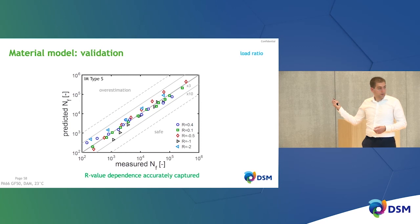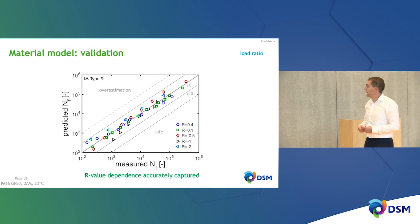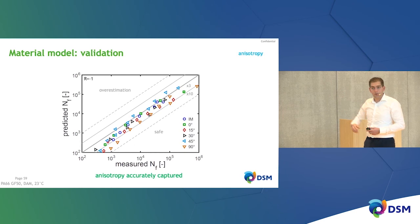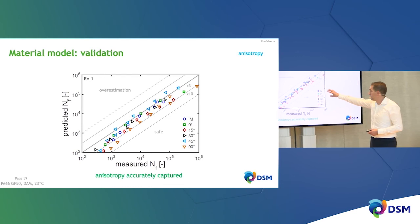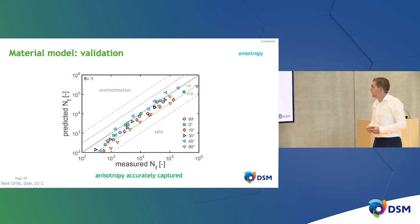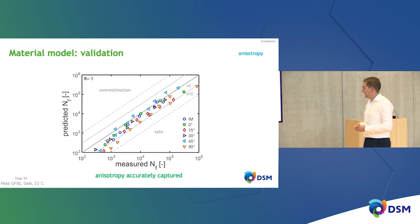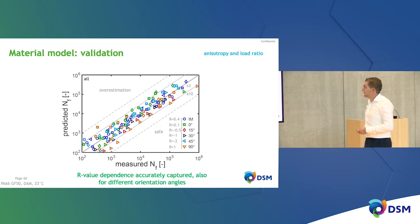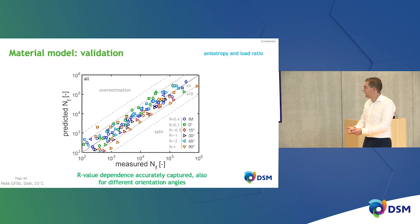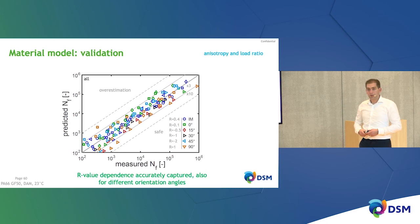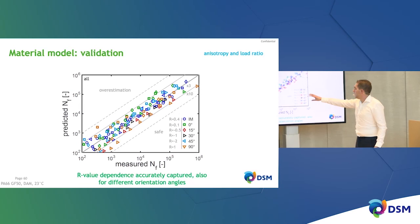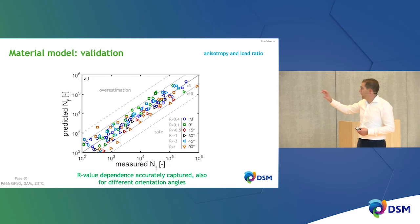For anisotropy, looking at R = -1 for samples with various microstructures — injection-molded tensile bars and plaque samples at different orientations — we can also predict the influence of anisotropy within the factor-of-3 band, being slightly conservative by design. Combining R-value dependency plus anisotropy, both microstructure and load ratio effects are captured very well. To summarize all data from tensile specimens: the model is consistent across a variety of R values and microstructures, where different markers represent different R values and colors represent different microstructures.